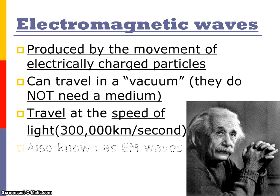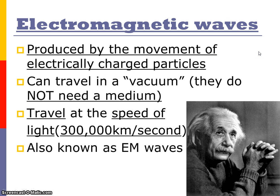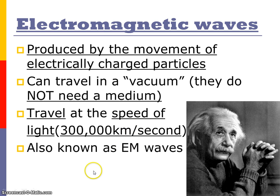Electromagnetic waves are produced by the movement of electrically charged particles. They are the waves that can travel in a vacuum — like the sun's electromagnetic waves reach the Earth through the vacuum of space. They travel without a medium. We call the speed at which they travel the speed of light, which is 300,000 kilometers per second. We also call them EM waves.